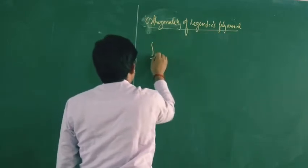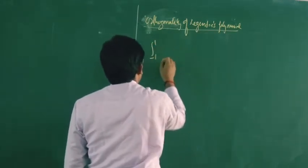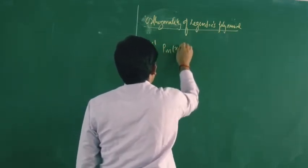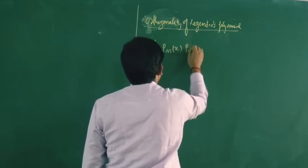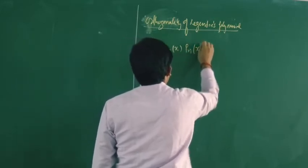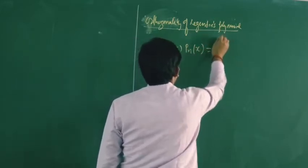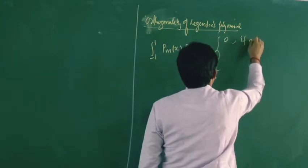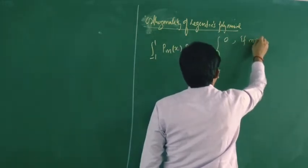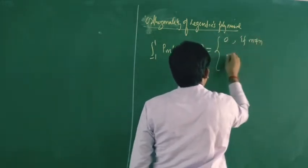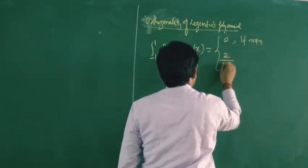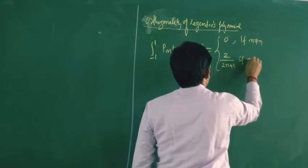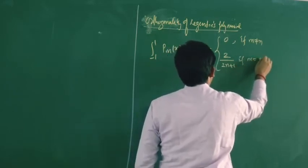The value of the integral from minus 1 to 1 of P_m(x) times P_n(x) is equal to 0 if m is not equal to n, and this is 2 upon (2n + 1) if m equals n.